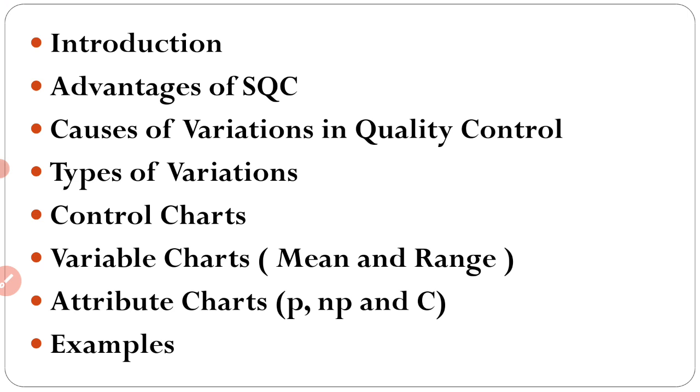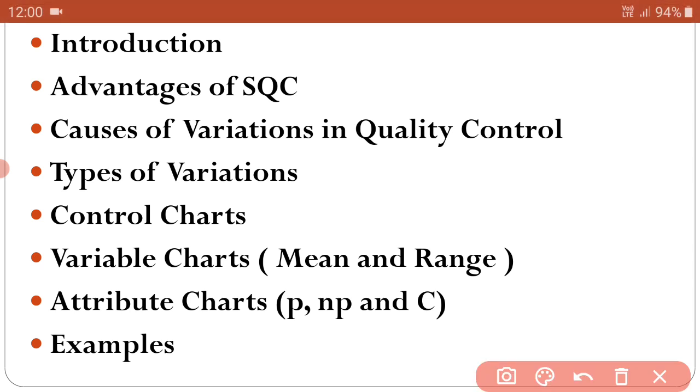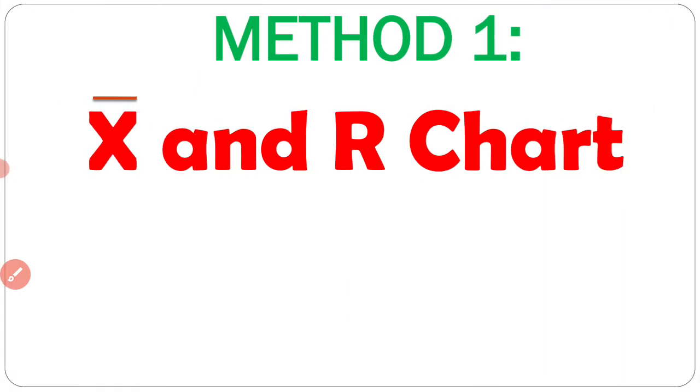In this chapter we include this topic. Introduction, advantages of SQC. It is a theory question. Causes of variations in quality control, type of variations. Control charts, variable charts, mean and range, attribute charts, P, NP, NC chart. We are doing practical questions for this. Mean, means X bar chart, R chart, P, NP, NC chart. Today we discuss about method number one, X bar and R chart.